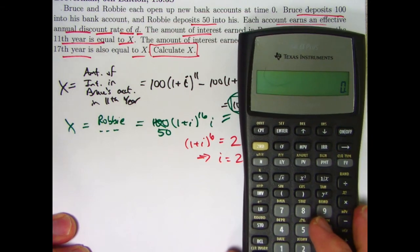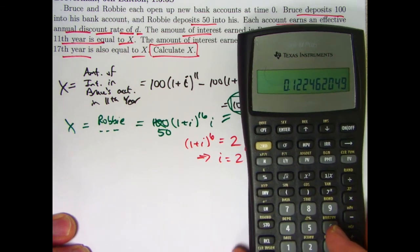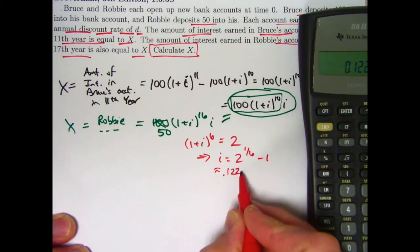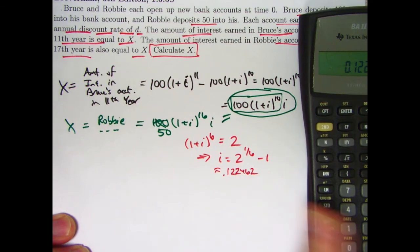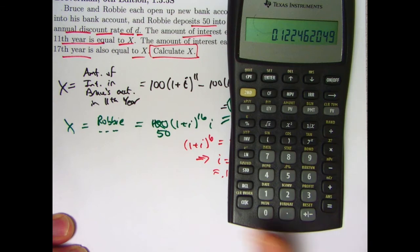1 sixth is 0.16 with the 6 repeating. I'll just type that in. 2 power 0.166666667, say, minus 1. The interest rate is about 12.2462%. Go ahead and write 0.122462. I'll store this in the calculator's memory register here in 0.